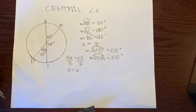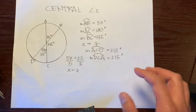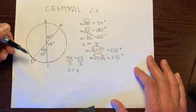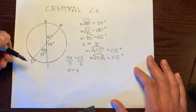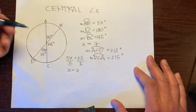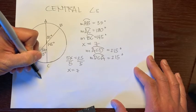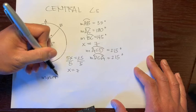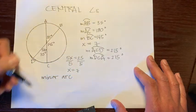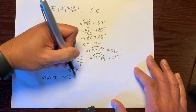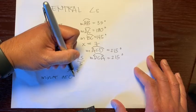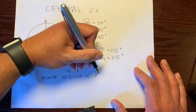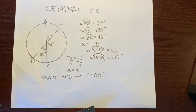So a few vocabulary words. First vocabulary word, for arcs or for central angles or arcs are minor arc, is an arc that is less than 180 degrees.